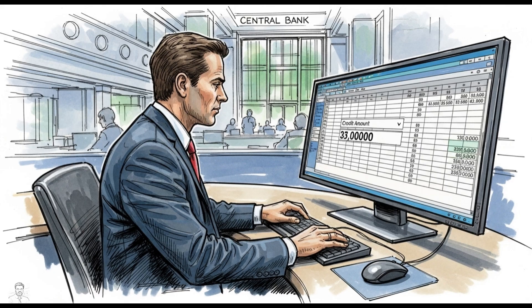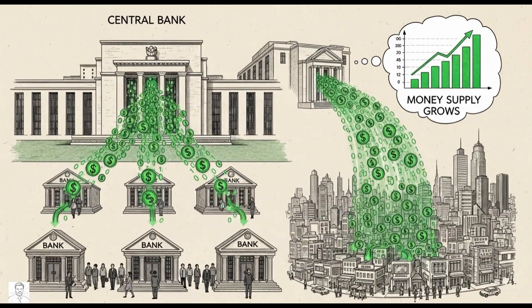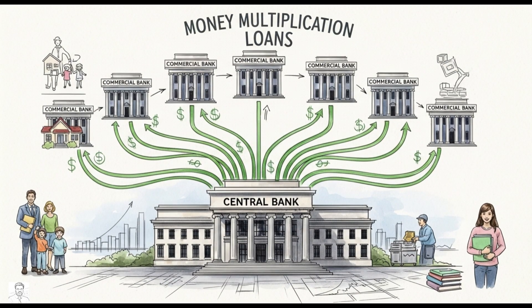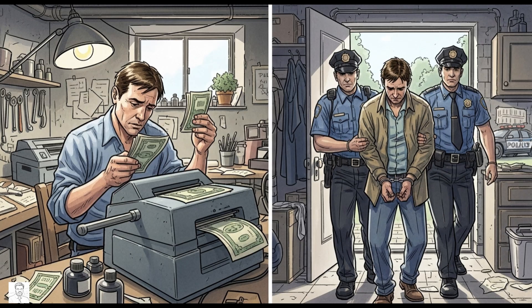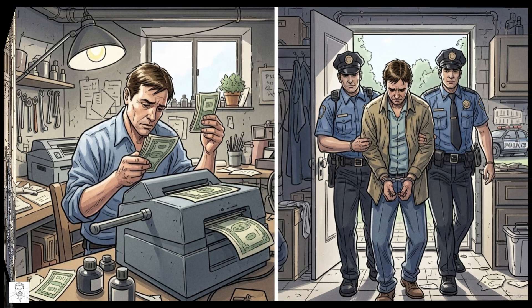Let's take it in a simple way. The government spends money into the economy, the central bank like the Federal Reserve creates new digital dollars to support that spending, banks multiply that money through loans — boom, the money supply grows. Now here's the funny part: if you try to print money, you get arrested. If a government does it, it's called monetary policy.